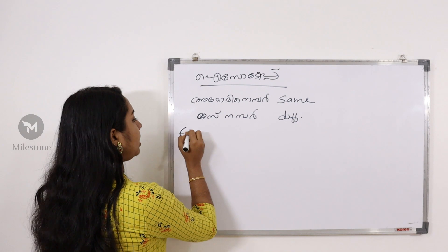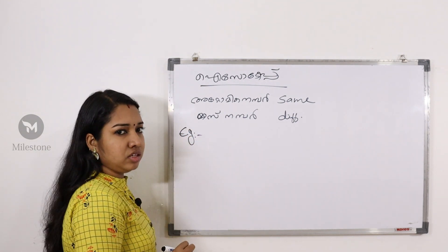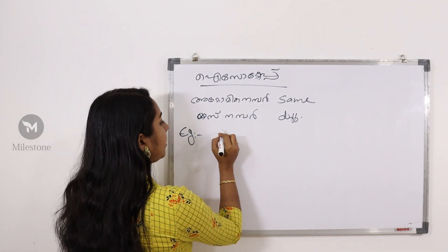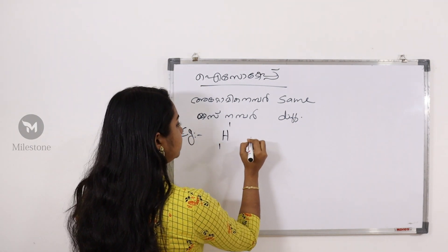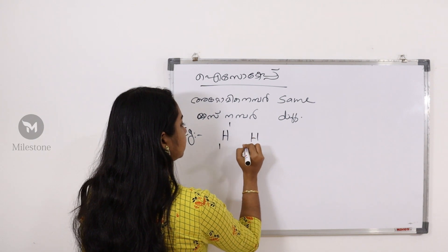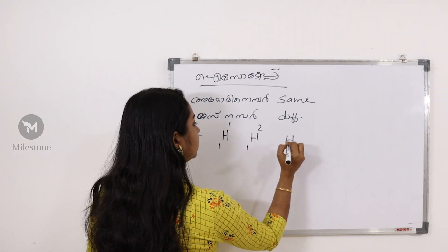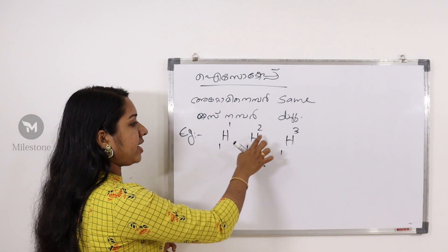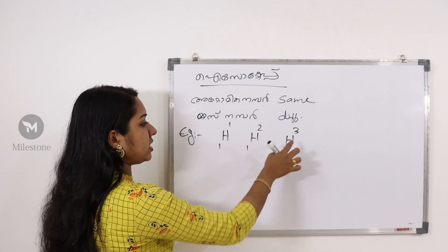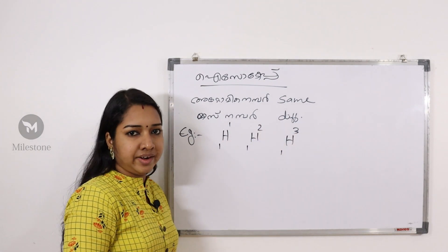What are hydrogen isotopes? H-1-1, H-1-2, H-1-3 — what is hydrogen?